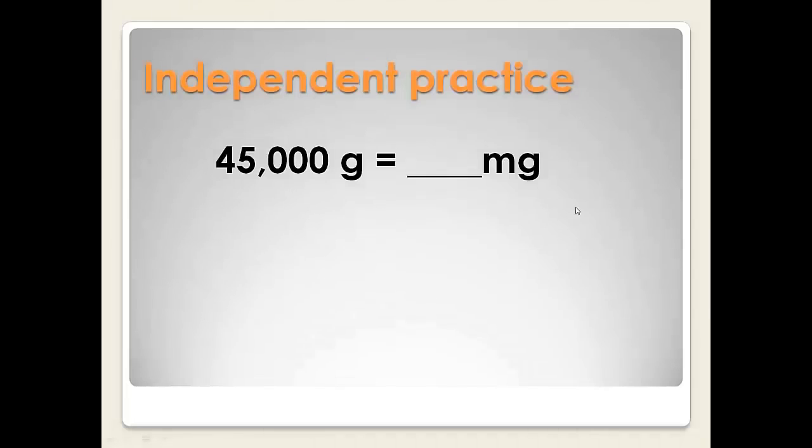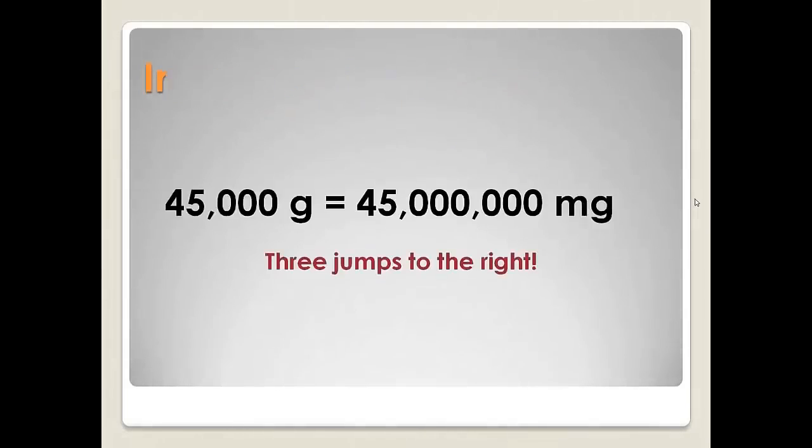Here's some independent practice for you. 45,000 grams is how many milligrams? Pause the video now, use your metric slider and figure out the answer to that one. 45,000 grams is 45 million milligrams. Three jumps to the right. I'm sure you did that right.